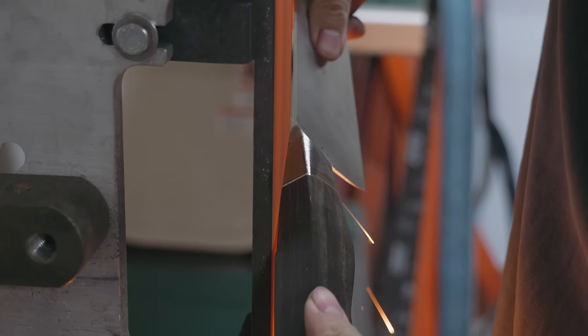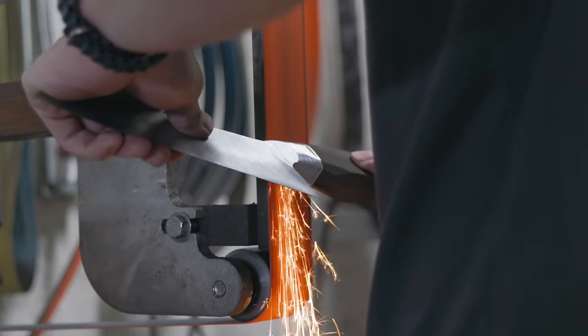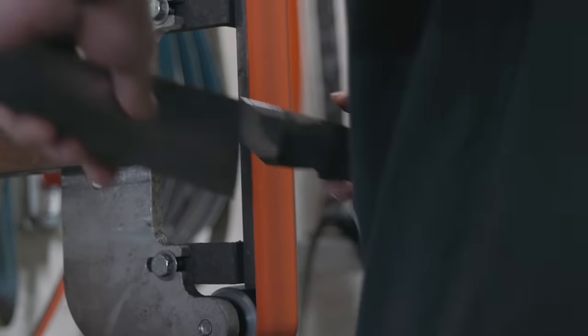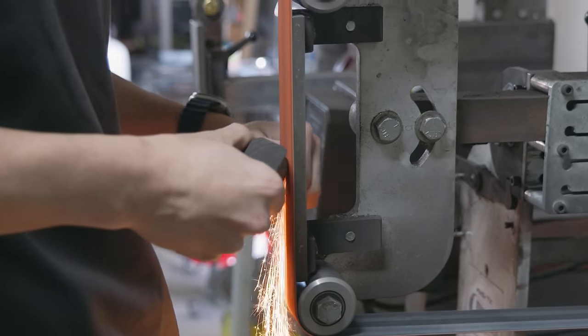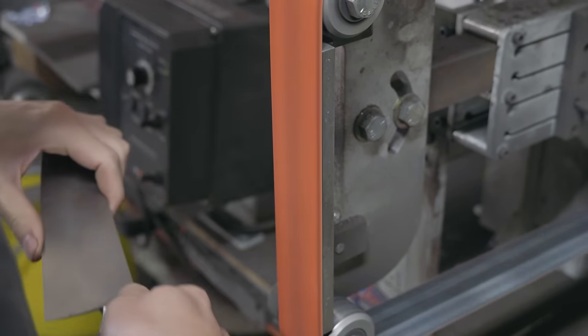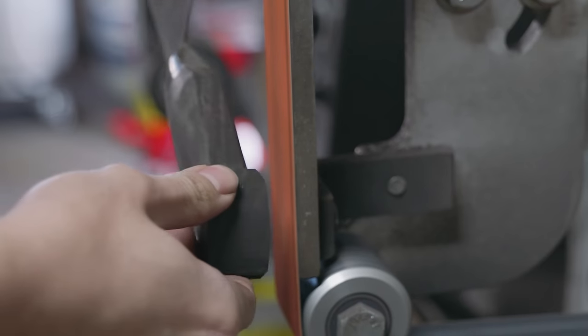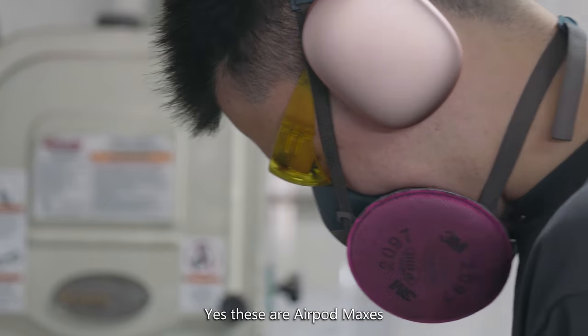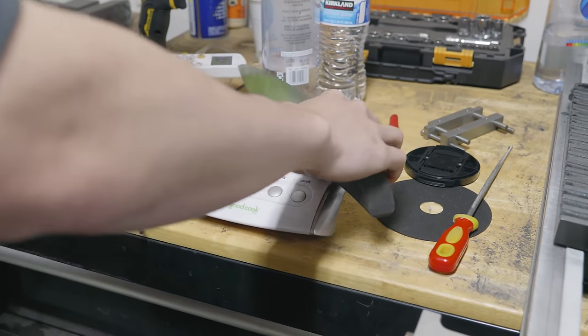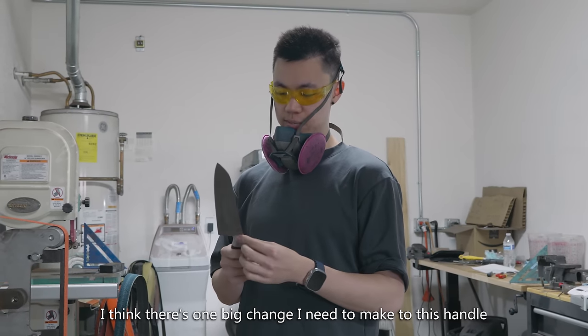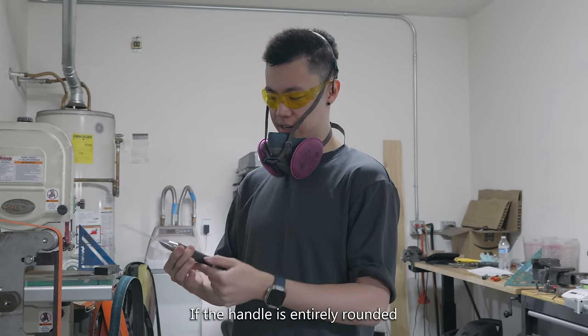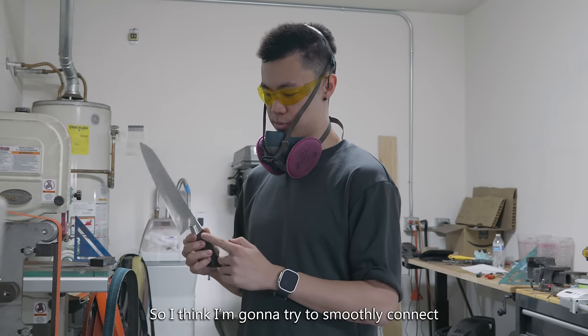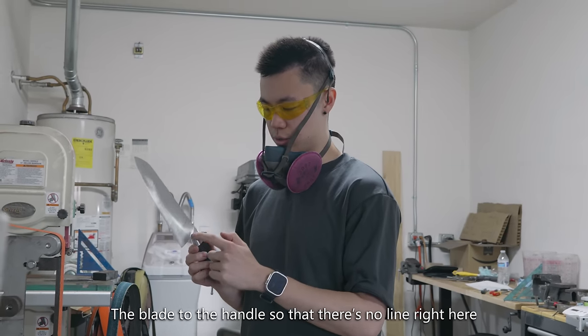This is the step in the handle grinding process where I finally get rid of all those dark marks in the bolster. Usually when I'm shaping my handles, there's really no hard stop point, but for this blade in particular, there's a minimum stop point. Those dark marks have to be pretty much 100% out of the handle. I think there's one big change I need to make this handle. If the handle is entirely rounded, this facet doesn't make sense. So I think I'm going to try to smoothly connect the blade to the handle so that there's no line right here.